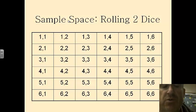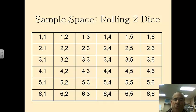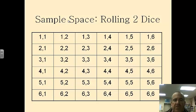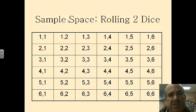And notice that a 1 and a 2 and a 2 and a 1, they are different things. They're not the same because the order changed. So when you write your sample space, there's six possibilities for the first dice. There's six possibilities for the second dice. Six times six, there's 36 possibilities total in our sample space.